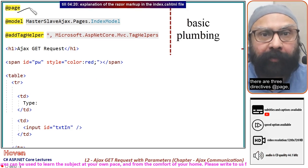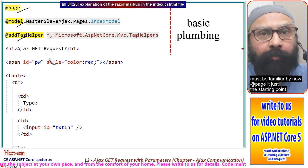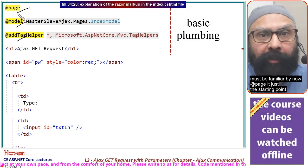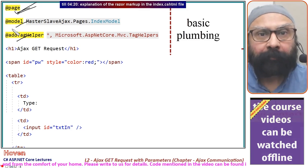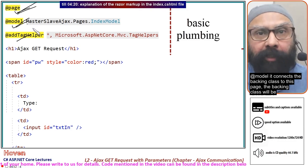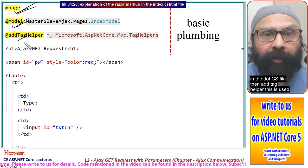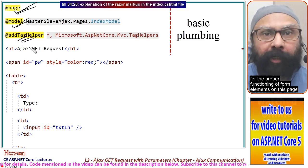There are three directives: @page, @model, and @addTagHelper. @page is the starting point of a Razor page. @model connects the backing class to this page. @addTagHelper is used for proper functioning of form elements.